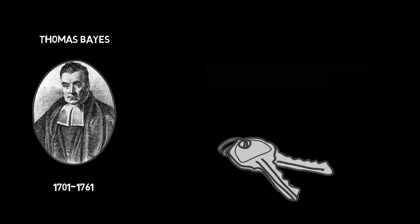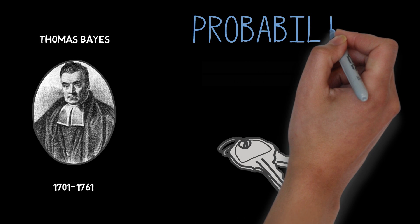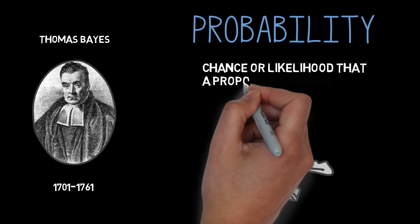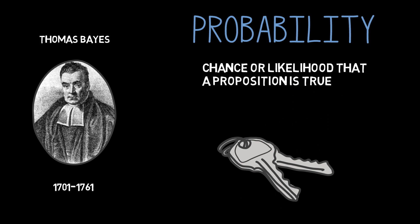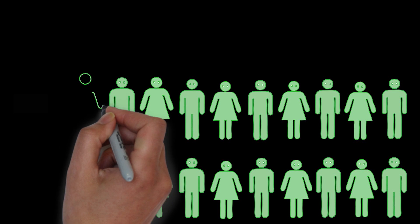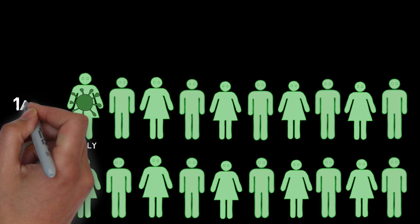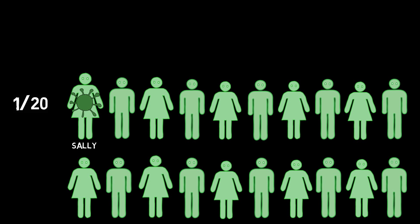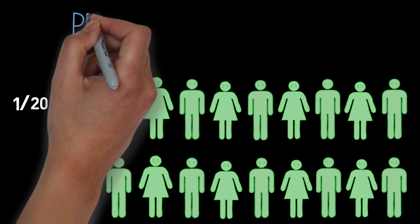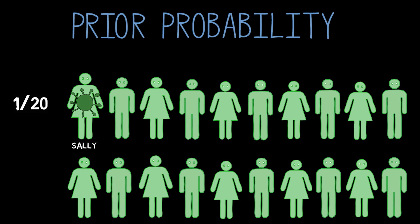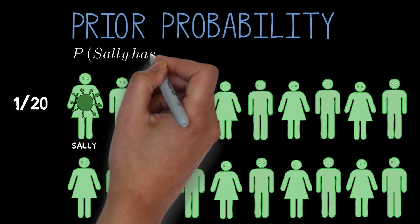In order to understand the theorem, we'll have to understand a little bit about probabilities. The probability of a proposition is the chance or likelihood that that proposition is true. Suppose you know that one student in a class of 20 has the flu, but you don't know who. If you know that Sally is a student in the class, you would say the probability that Sally has the flu is 1 in 20, or 5%, or .05. We can call this your prior probability that Sally has the flu, because it's your probability prior to finding out any new information. As a shorthand, we'll write P of Sally has the flu equals .05.